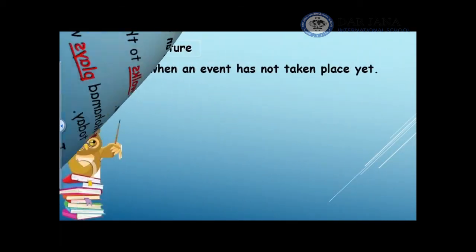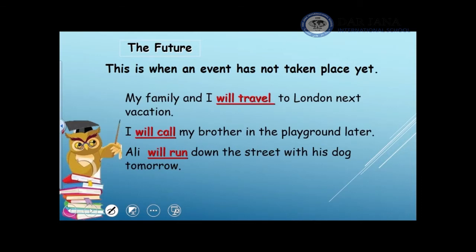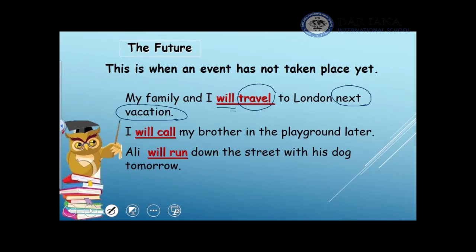Let's move to the future tense. This is when an event has not taken place yet — it did not happen, but may happen in the close time, like next week, soon, or later. For example, my family and I will travel to London next vacation. I did not travel yet, but next vacation — which may happen next summer or next spring — I will travel. Whenever I have something happening in the future, I use 'will' before the verb.